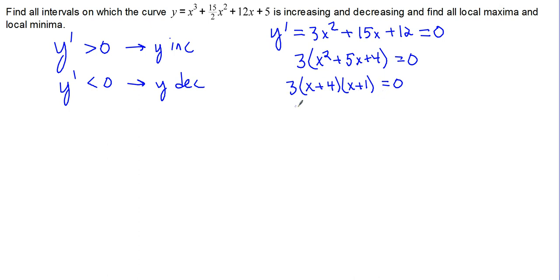Well, 3 never equals 0, so we can ignore that one. But x plus 4 equals 0 when x equals negative 4, and x plus 1 equals 0 when x equals negative 1.